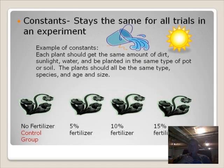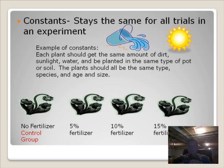Another part of an experiment is called the constants. Every experiment has to have constants, and this is what stays the same for all the trials of an experiment. In our example, all four plants get the same amount of these things. Constants would be, for example, sunlight. We want to make sure that each one of those four plants gets the same amount of sunlight.